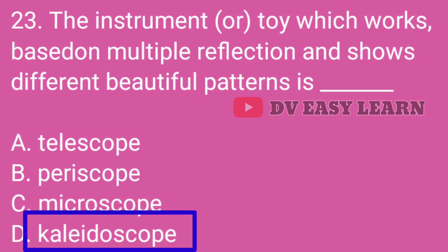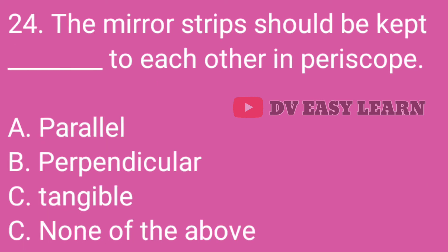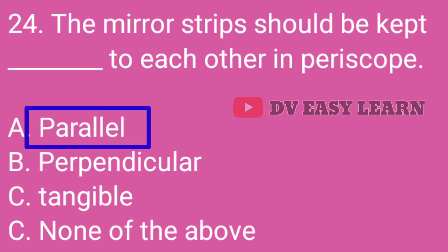Question No. 23: The instrument or toy which works based on multiple reflection and shows different beautiful patterns is — Correct answer: Kaleidoscope. Question No. 24: The mirror strips should be kept dash to each other in a periscope. Correct answer: Parallel.